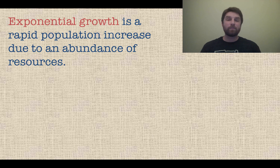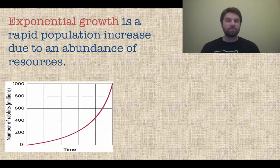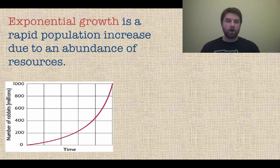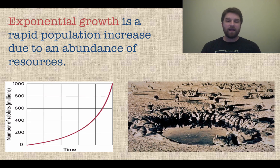First, let's examine exponential growth — it's a rapid population increase due to an abundance of resources. When there are lots of available resources, looking at this graph you will see a completely exponential growth curve. You see a large jump from early on in the population to later, and we think of things like rabbits, which will overpopulate an area very quickly.